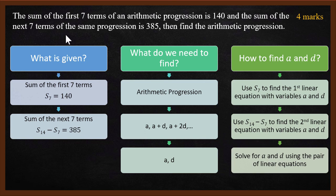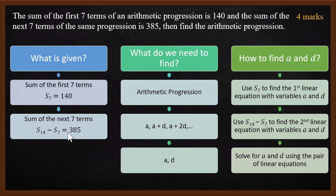Now this is a tricky bit. How do you say the next 7 terms is 385? You can say that sum of 14 terms minus sum of 7 terms is 385. When you subtract the first 7 terms from the first 14 terms, you will get the next 7 terms. That's the equation.